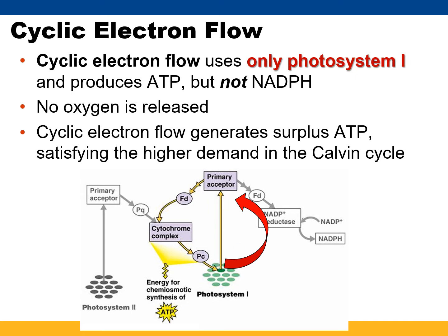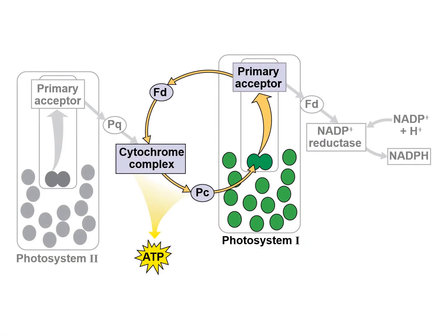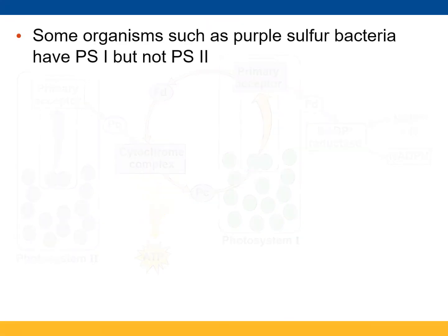Light excites it again, so light drives this process. Here's a nice picture of the cyclic electron flow. Maybe cyclic electron flow is just a holdover from an earlier era. All we do know is that you can't function in regular linear flow without having some cyclic flow, so there is something to it, but we haven't quite wrapped our brains around it.